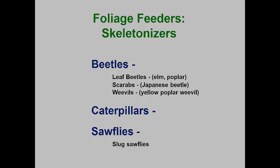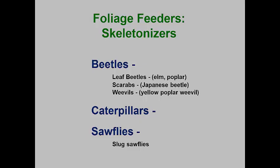Did they remove the upper leaf tissues or lower leaf tissues? The oak slug sawfly skeletonizes from the lower leaf surfaces, while the poplar leaf beetle larvae skeletonize from the upper leaf surfaces.